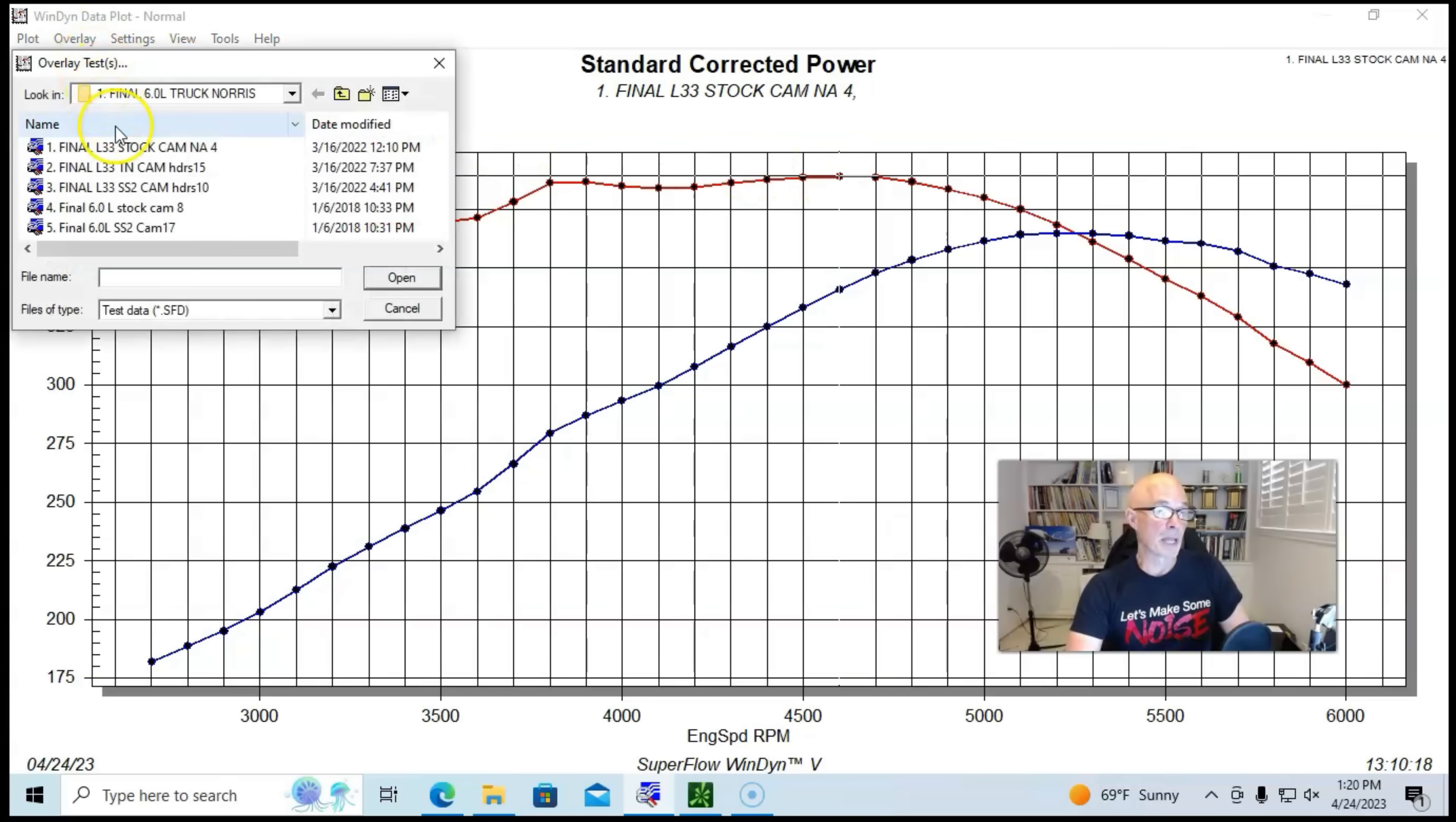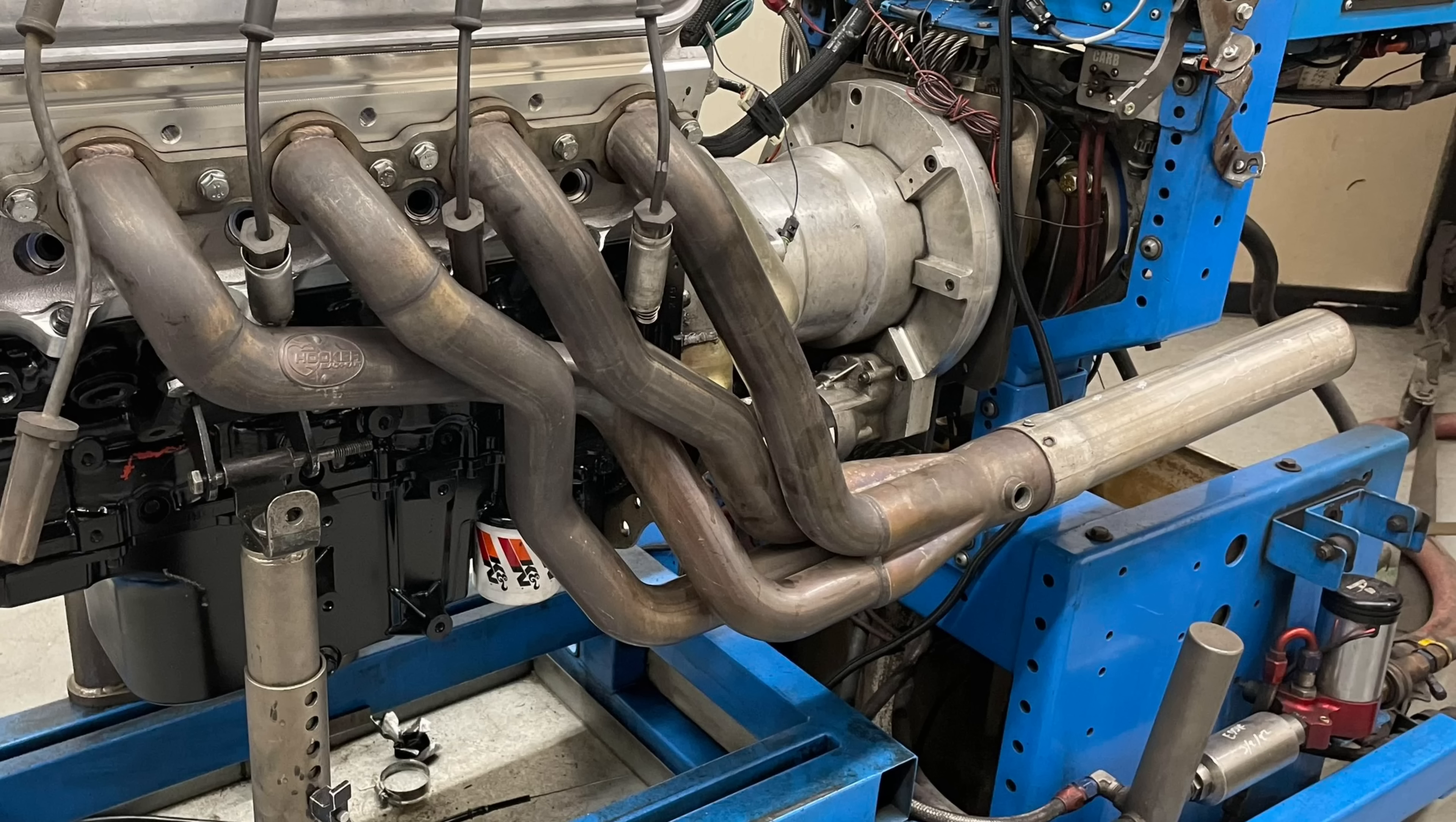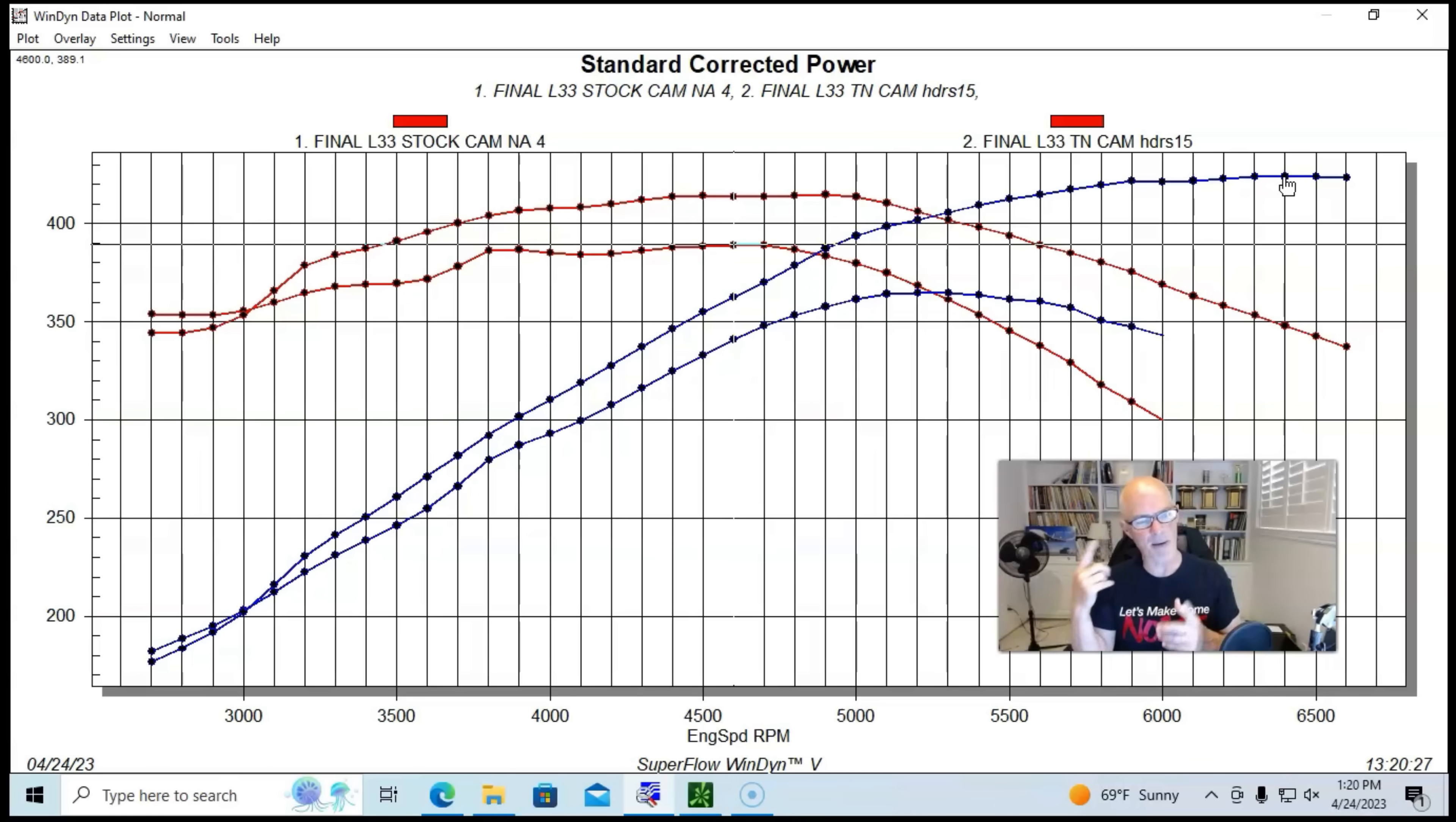To get things started, here's what happened when we put the Truck Norse Cam in. Good curve, picked up power everywhere, slight loss maybe down below 3,000, although I've mentioned before, this one was running with the 1-7/8 headers. The guys from Brian Tooley, when they run their testing, say that they don't see that when they run smaller 1-3/4 headers and the exhaust the way that they run it.